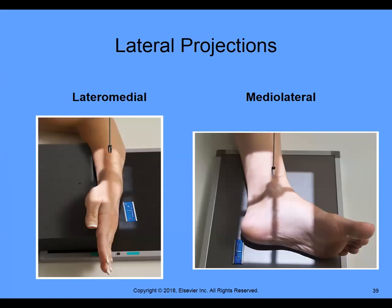Looking at a lateral projection: we cannot say it's AP or PA because we're not entering anteriorly or posteriorly — we're entering laterally. Lateral means anything that is 90 degrees. Anything at 90 degrees makes it a lateral. Anything away from 90 degrees — like 20, 30, 40, or 70 degrees — would be considered oblique, because we're just rotating the patient. 90 degrees makes any anatomical part a true lateral.